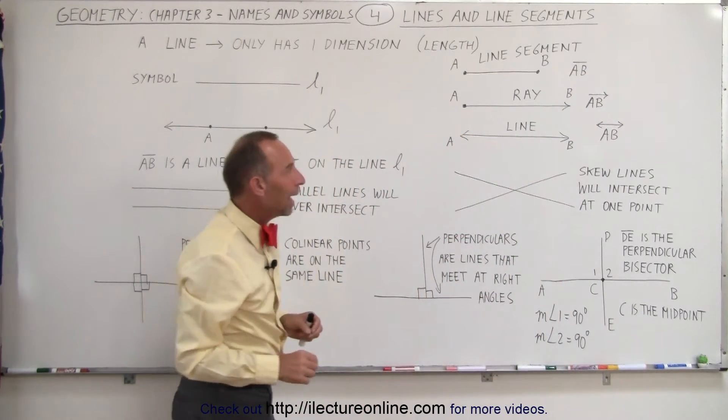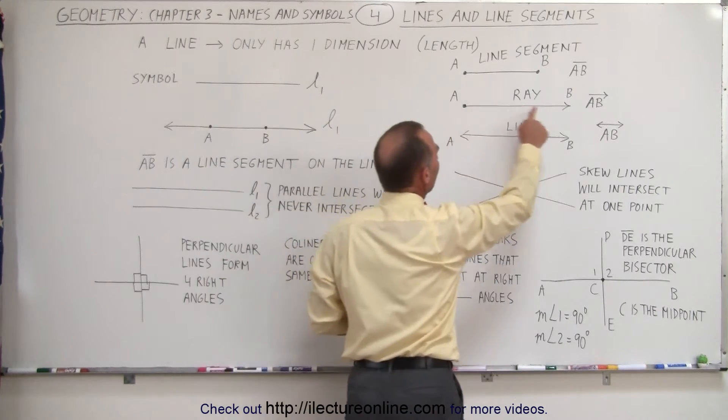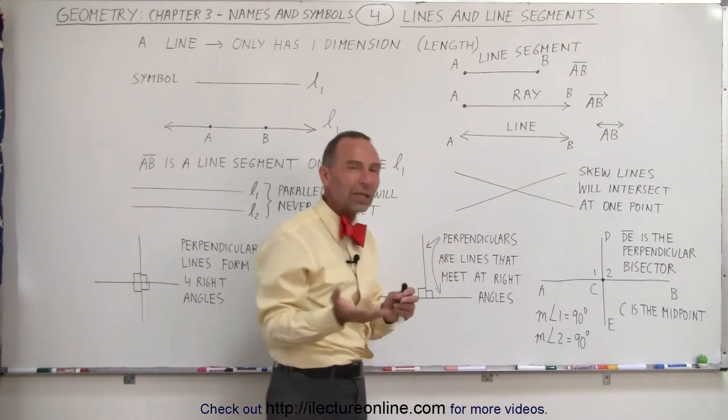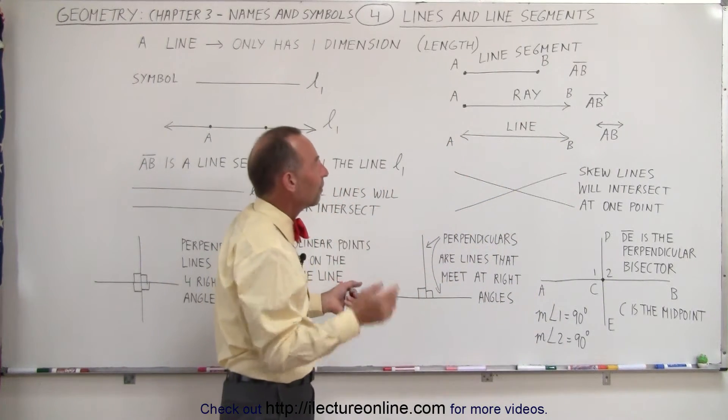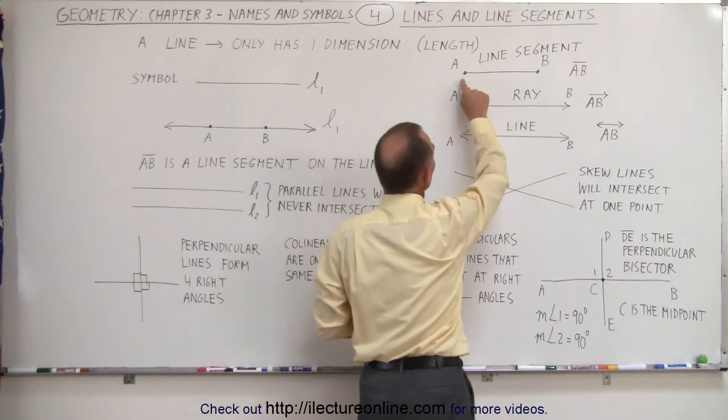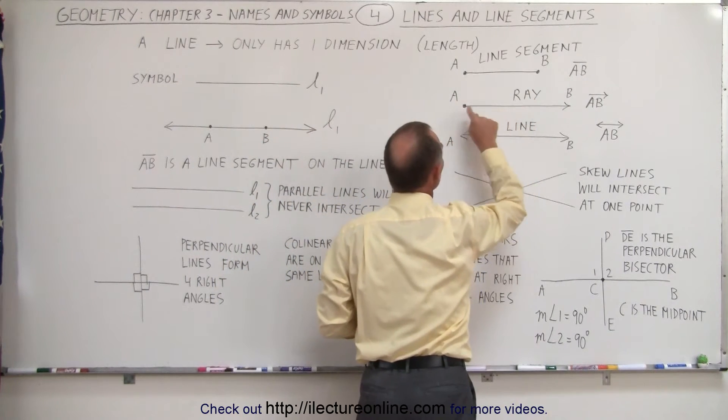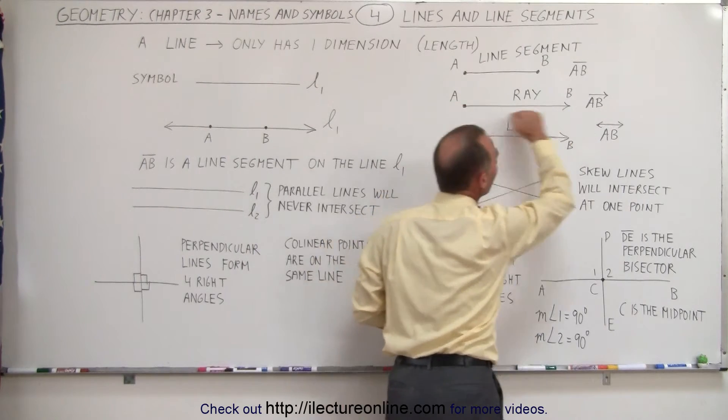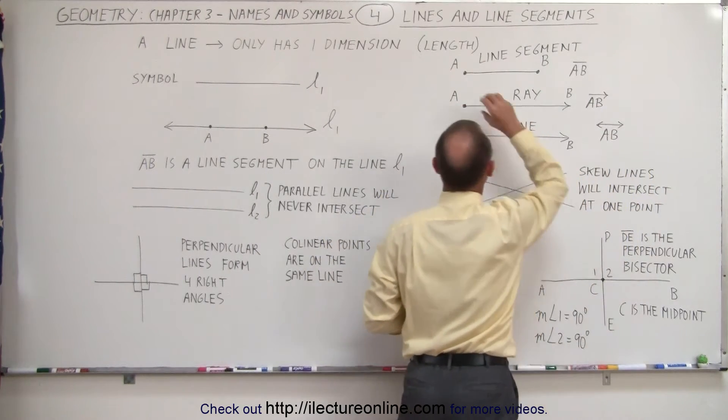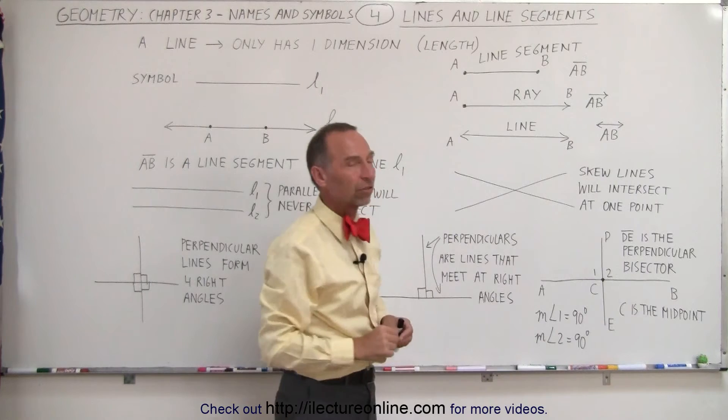A ray has a starting point, but no end point. It's kind of somewhere between a line and a line segment. So just like a line segment has a start and an end point, a ray has a start point, but no end point, meaning it goes on forever in one direction, but it has a starting point in the other direction.